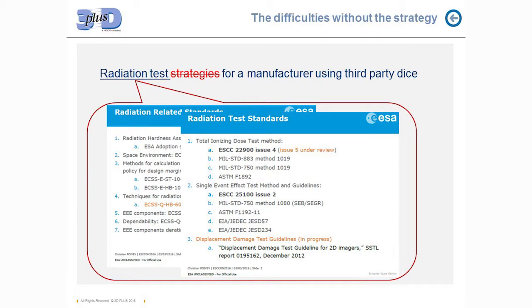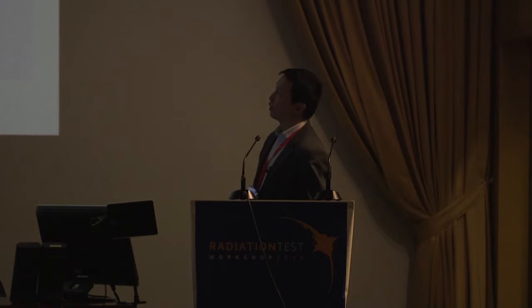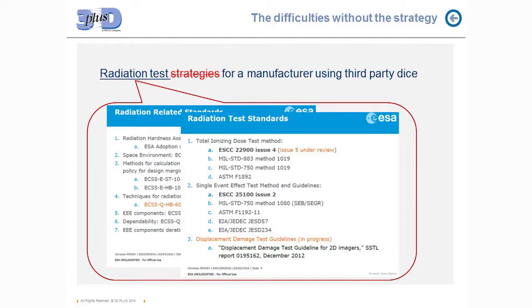We also have standards for EE components, dependability, and working tests — for example, on power MOSFETs where derating should be applied. There are many standards; that's just part of them. We also have the test standards: the ESCC 22900 for TID in the new issue, and a lot of American standards. Fortunately, there is now good coordination between European and US standards. For single event effects, we have ESCC 2510, and in the coming months, probably a displacement damage test guideline as well.